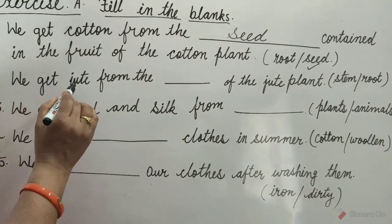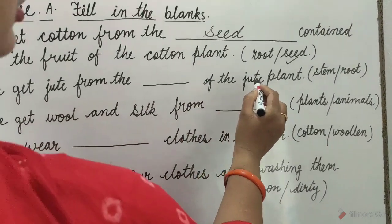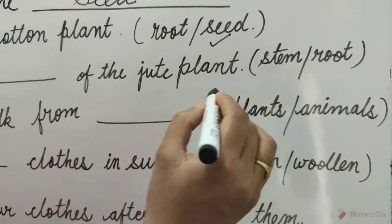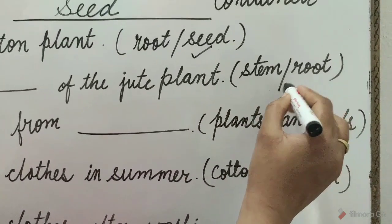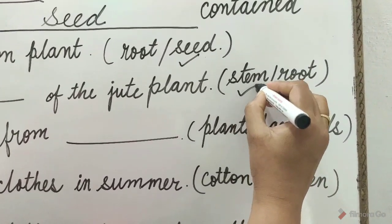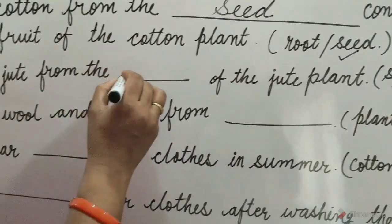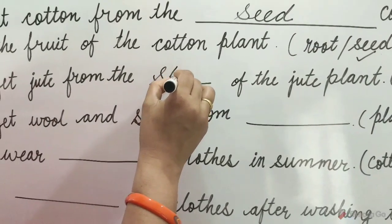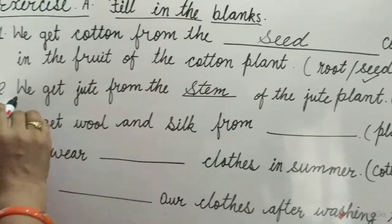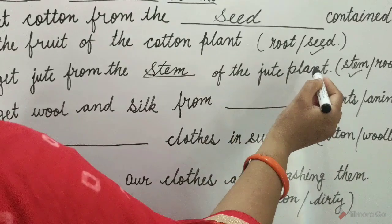2. We get jute from the blank of the jute plant. The options are stem, oblique, root. Stem is the correct option. We get jute from the stem of the jute plant.